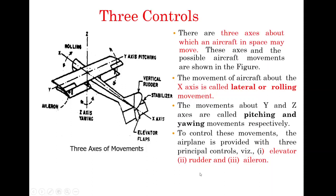We will now move towards the three control system. There are three axes — X, Y, and Z — about which the aircraft moves in space. When the aircraft moves about the X axis, the movement is called lateral movement or rolling movement. When it moves about the Y and Z axes, the movements are called pitching and yawing movements.